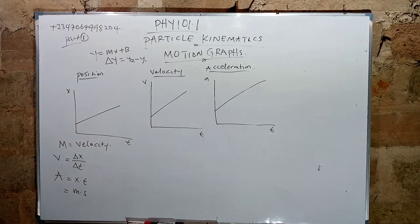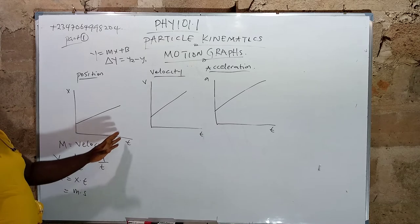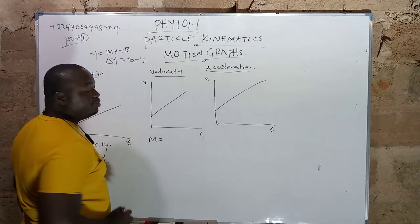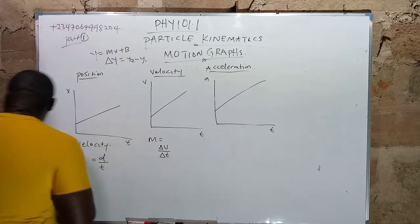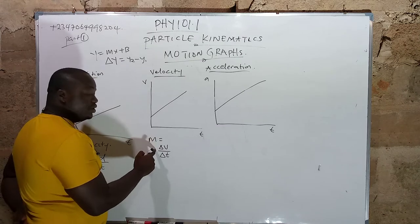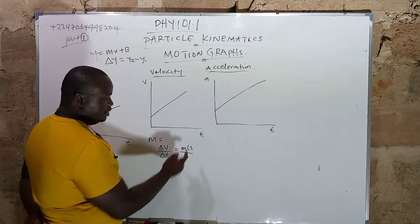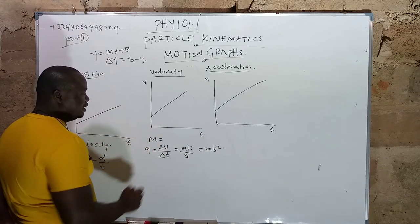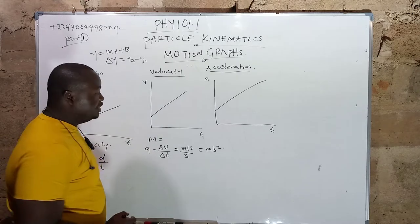Moving to the velocity-time graph: the slope involves division, so we have changing v over changing t. The SI unit of velocity is meters per second and time is in seconds, so changing velocity over time gives meters per second squared. This means the slope of the velocity-time graph is the acceleration.